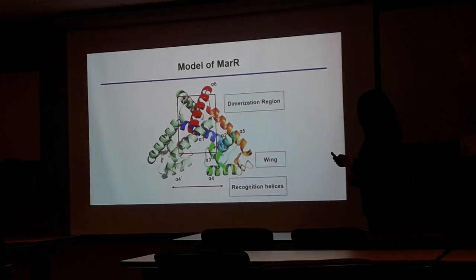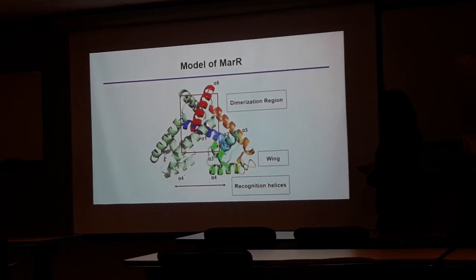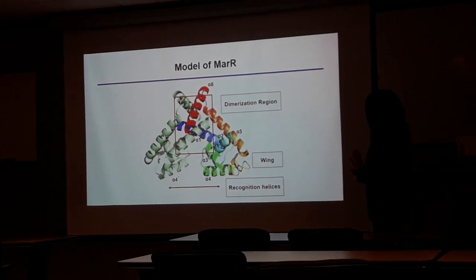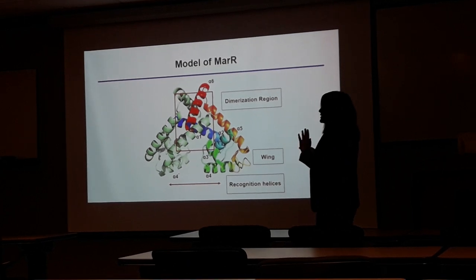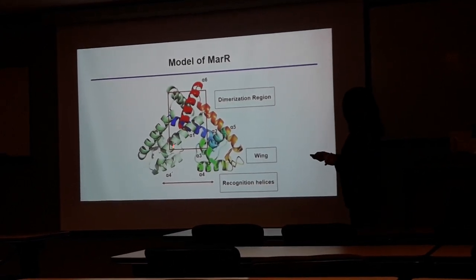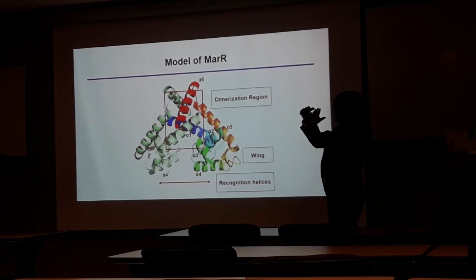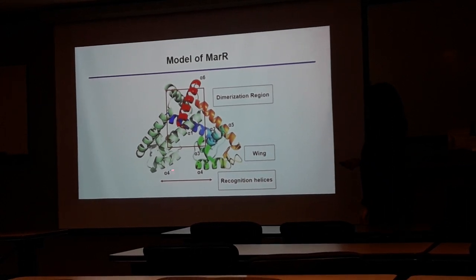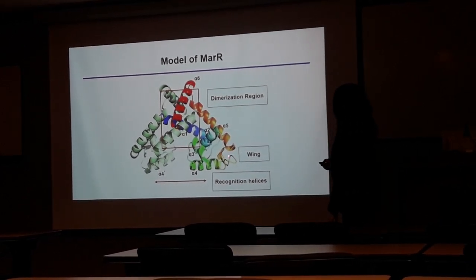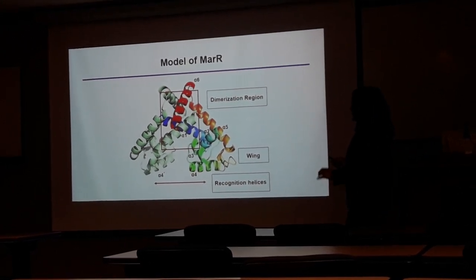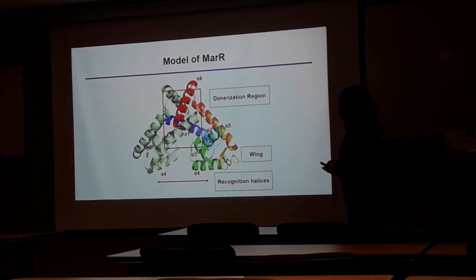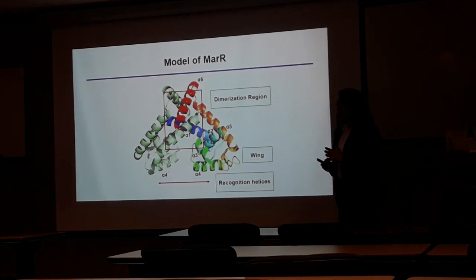Let's look at the classical model of MarR. MarR exists as a homodimer. One monomer is shown in rainbow color and the other in green. MarR typically consists of six alpha helices and three beta strands. It has a dimerization region along intersecting helices, including alpha-1, which forms the scaffold for the dimerization region. This is connected to the DNA-binding region, where alpha-4 helices form the recognition helices that bind DNA. There is also a wing region involved in DNA binding, and this winged helix-turn-helix pattern is the signature structure of the MarR homodimer.